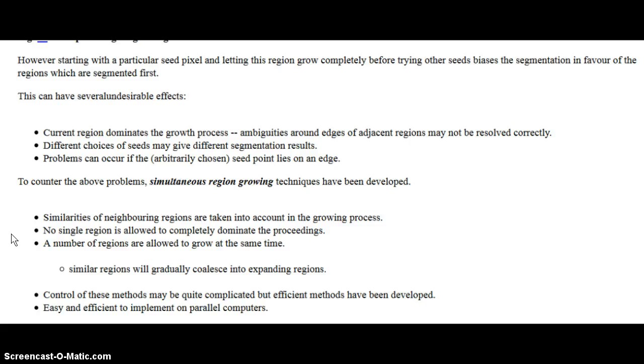There are some ways to prevent these problems. The similarity neighborhoods and regions are taken into account when you're doing the region growing process. If you have an image that has similar colors or similar scheme, then you take that into account. Also, you don't let one region dominate the others. You let multiple regions grow at the same time. Use multiple seeds at the same time instead of just using one seed. Basically, if you control these and avoid these problems, you'll get better segmentation results.